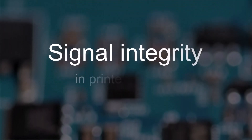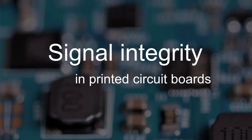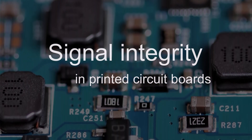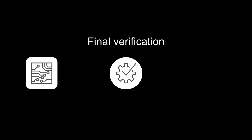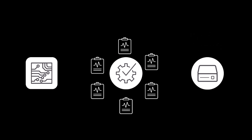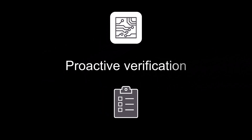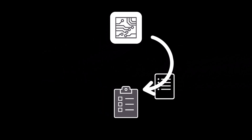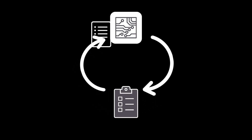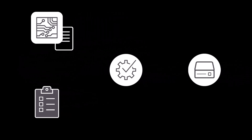Ensuring signal integrity in PCB designs is crucial for timely product launches in today's fast-paced technology landscape. With the introduction of new digital standards and their heightened signal integrity requirements, it is clear that early verification is crucial to avoid costly respins and delays. By shifting the focus to proactive verification during the design iteration stage, PCB design teams can efficiently address signal integrity challenges, resulting in better productivity and faster time to market.